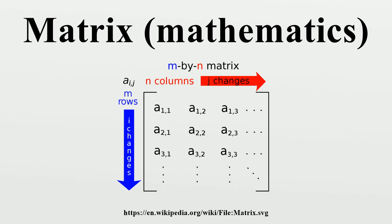There are three types of row operations: row addition, i.e., adding a row to another; row multiplication, i.e., multiplying all entries of a row by a non-zero constant; and row switching, i.e., interchanging two rows of a matrix. These operations are used in a number of ways, including solving linear equations and finding matrix inverses.